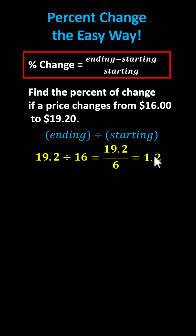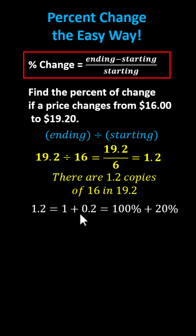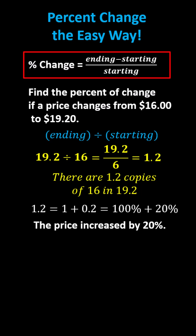This equals 1.2, meaning there are 1.2 copies of 16 in 19.2. Since 1.2 is equal to 1 plus 0.2, which as percentages is 100% plus 20%, the price has increased by 20%.